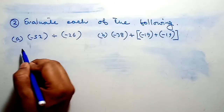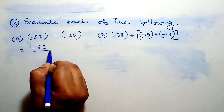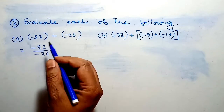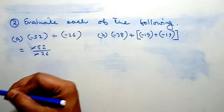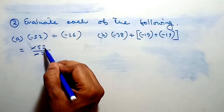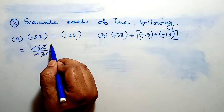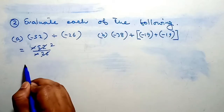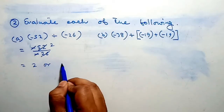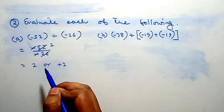Here we write minus 52 divided by minus 26. So this minus and this minus cancel. When we divide 52 by 26, we get 2. Therefore our answer is 2, or you can write positive 2. Either one is correct.